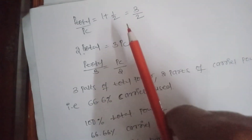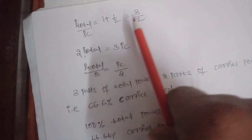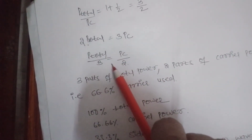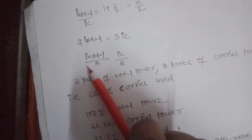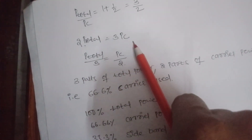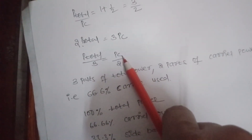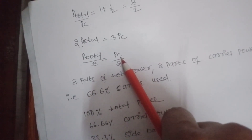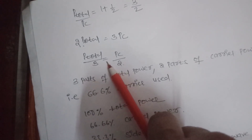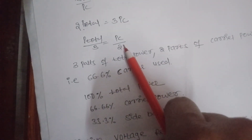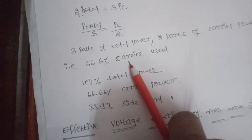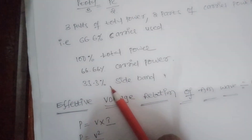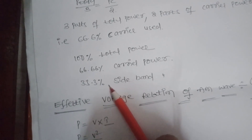Since P_total/PC = 3/2, we get 2·P_total = 3·PC, or P_total/3 = PC/2. Considering the total power in 3 parts: 2 parts are consumed by the carrier signal and 1 part by the sidebands. This means the carrier consumes 66.6% and the sidebands consume only 33.3% of the total power. This is the disadvantage of the standard AM wave.